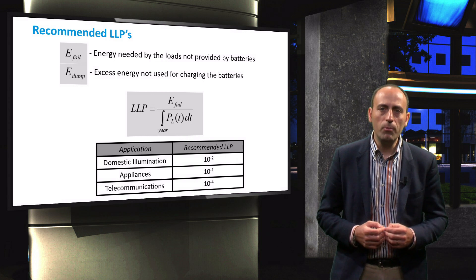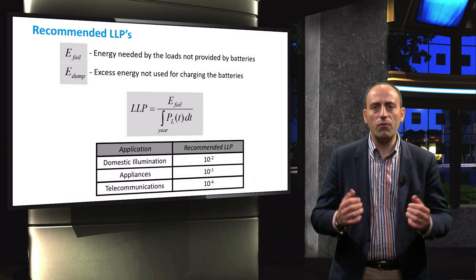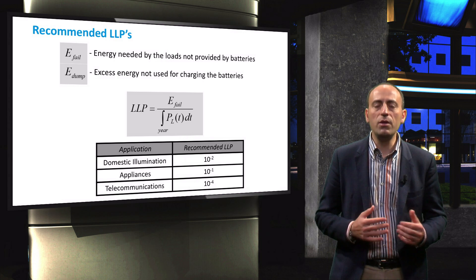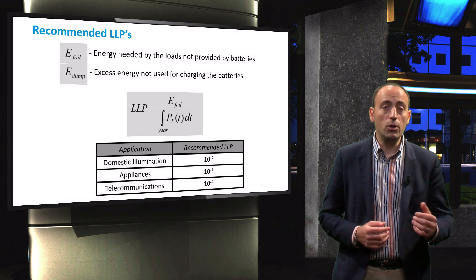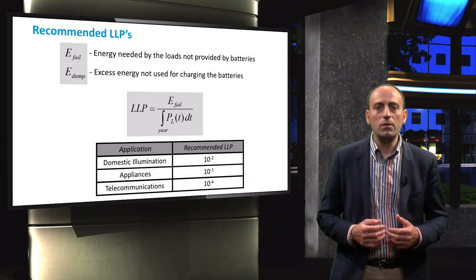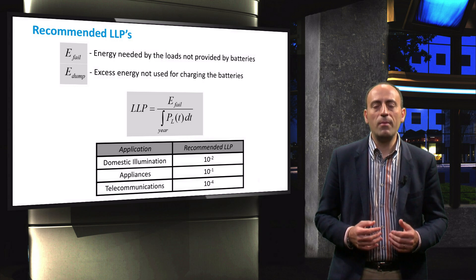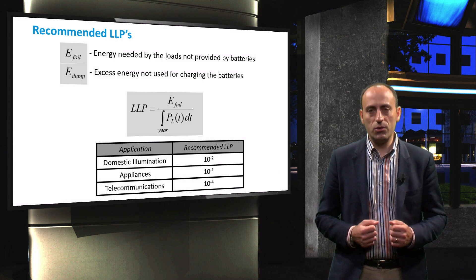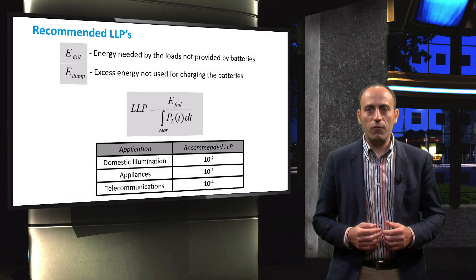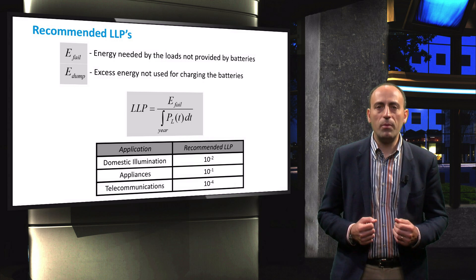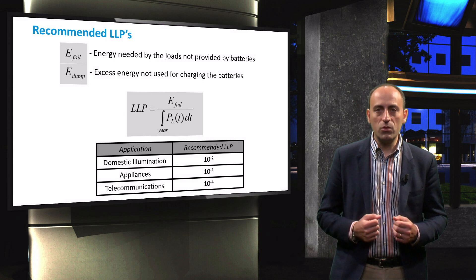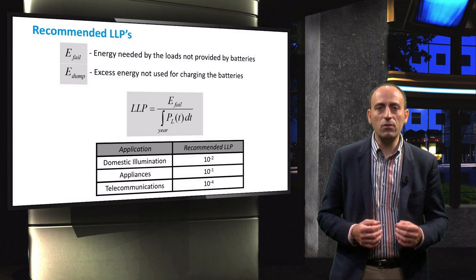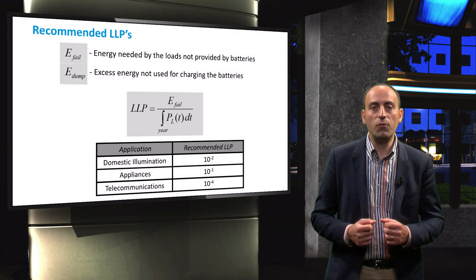This table provides typical values of recommended LLPs for different applications. For illumination, the typical recommended LLP is 10 to the power of minus 2. For appliances, it is 10 to the power of minus 1, and for telecommunication, it is 10 to the power of minus 4.